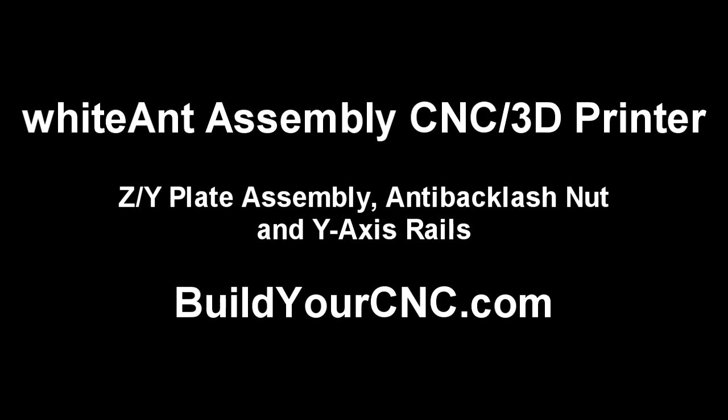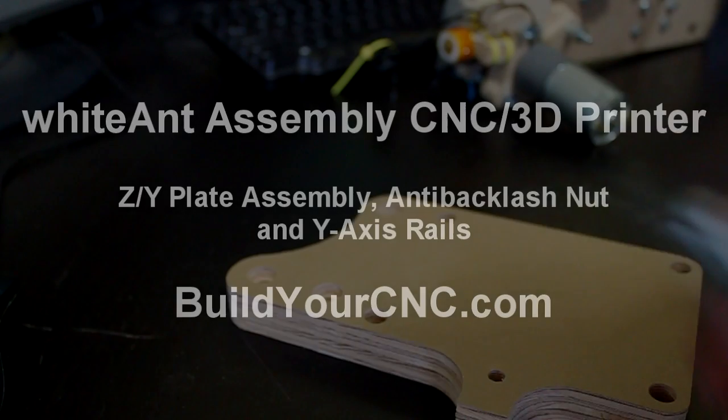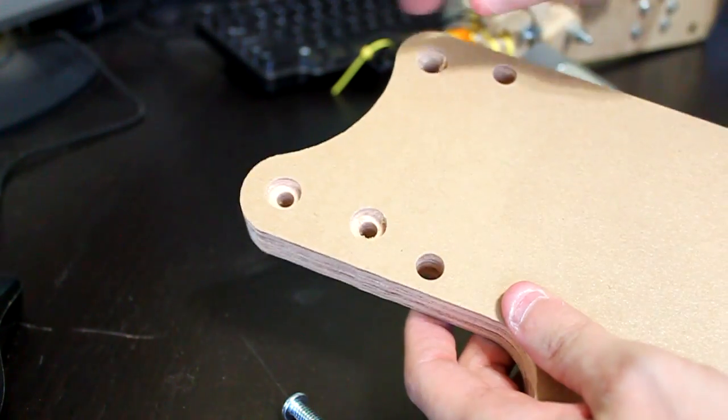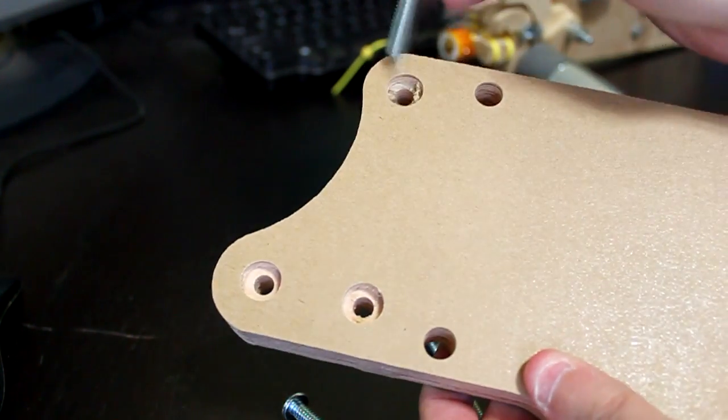In this video, necessary parts will be added to the ZY plate and the rails will be installed on the Y axis rail support.